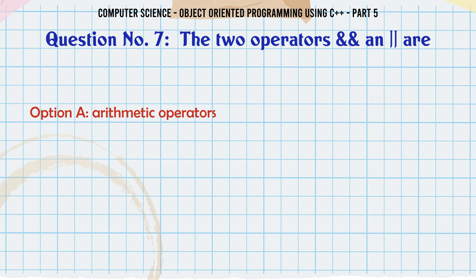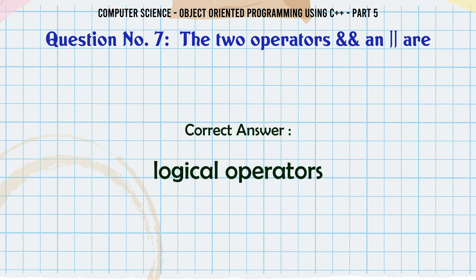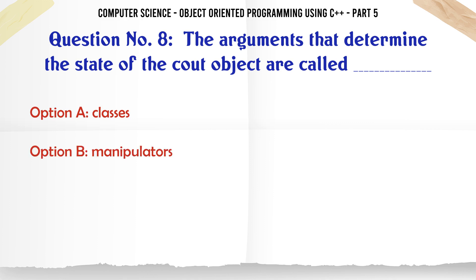The two operators in R. A. Arithmetic operators. B. Equality operators. C. Logical operators. D. Relational operators. The correct answer is: Logical operators.